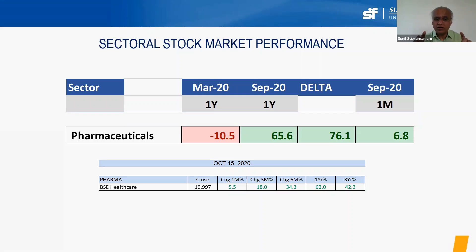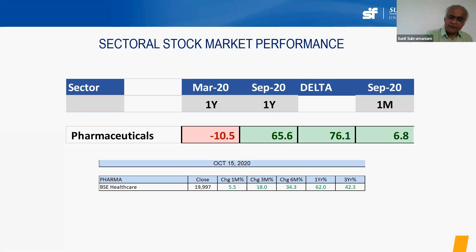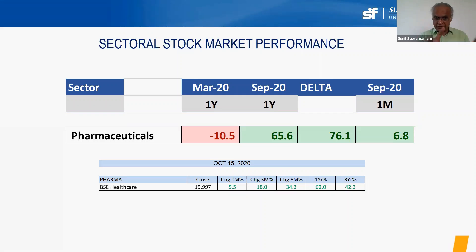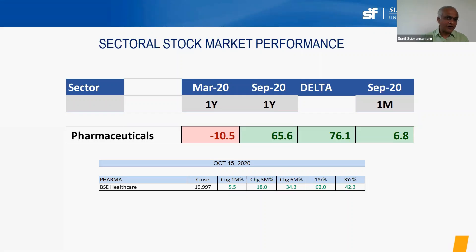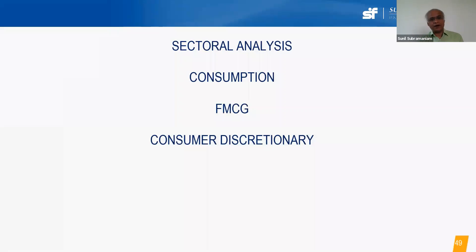More importantly, wherever in the world a COVID vaccine or cure is discovered, manufacturing it in bulk will have to rely on Indian pharma, as India has built massive bulk drug manufacturing capacity over the years. Many Indian pharma companies are expected to benefit from this order book. The pharma index has done very well. This is another answer to the RBI governor's point about market-economy disconnect: pharma's stock market performance depends on the recovering world, not just the depressed domestic economy.